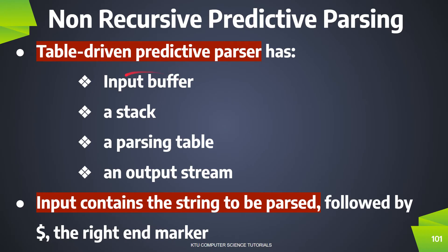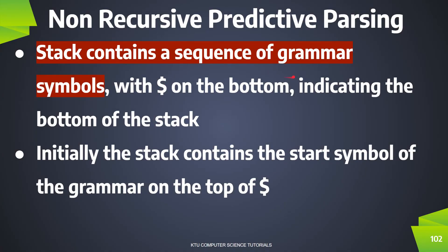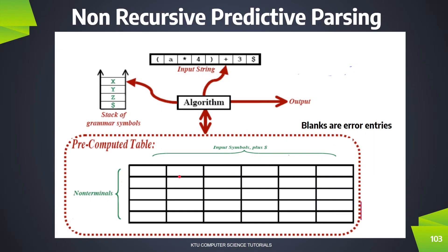We have the first Input Buffer with the input string and the last $. We have the Stack containing grammar symbols, also ending with $. Initially, the Stack contains the start symbol of the grammar on top of $. We also have the Parsing Table.